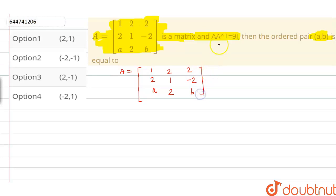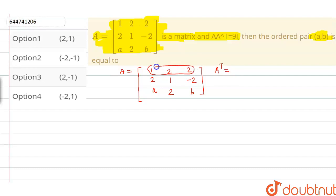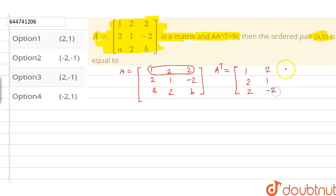Now, to calculate the transpose of matrix A, we know that transpose is basically rows becoming columns. So row 1 becomes a column, row 2 becomes a column, and row 3 also becomes a column. In this way, we obtain the transpose of matrix A, which becomes: 1, 2, 2; 2, 1, minus 2; and A, 2, B.